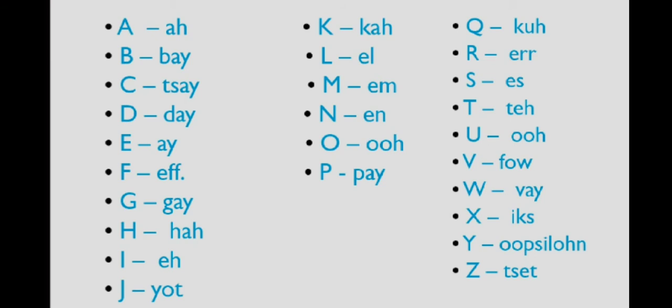A, B, C, D, A. Jho E hoota hai, wo German me A ka sound deta hai, English A.